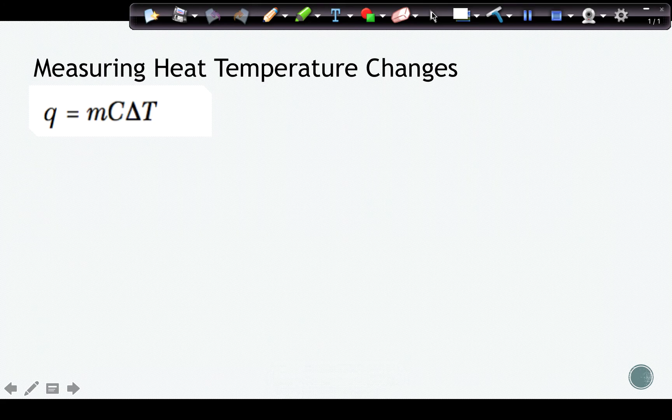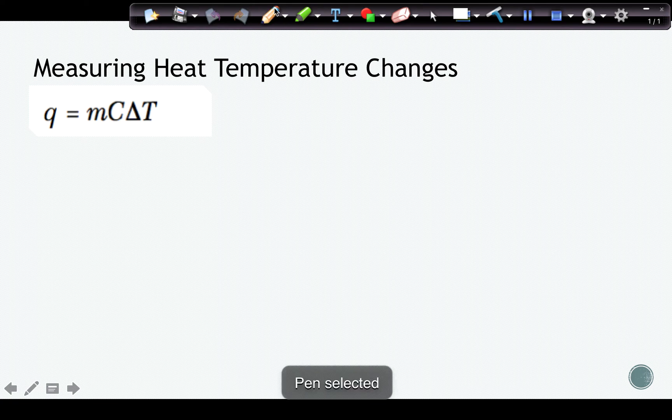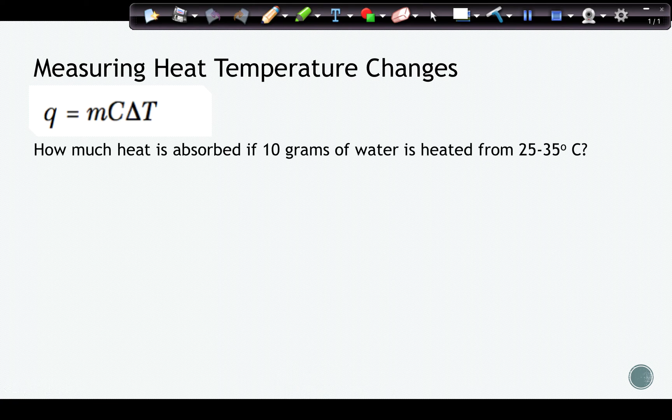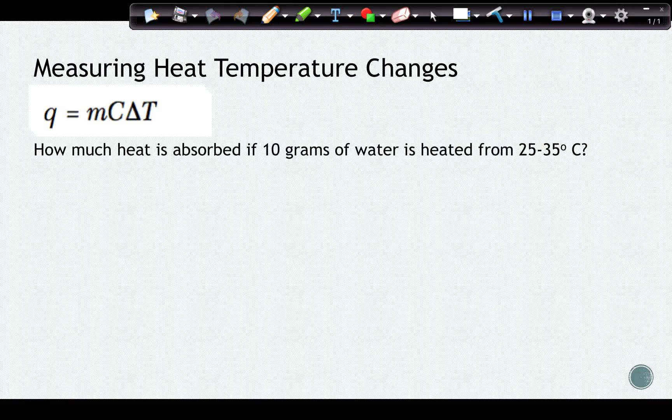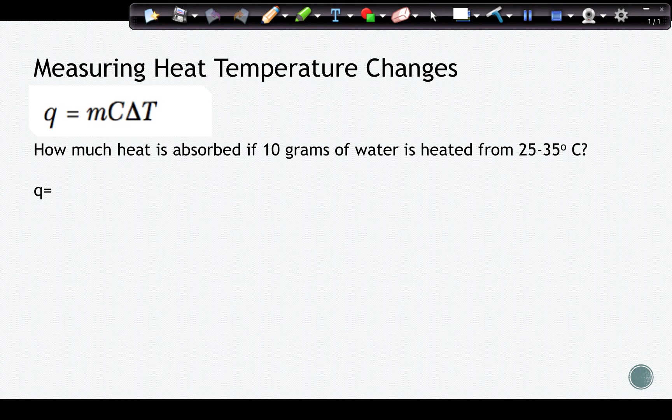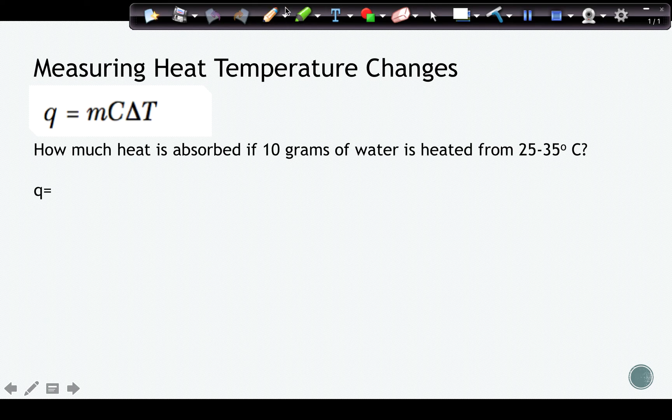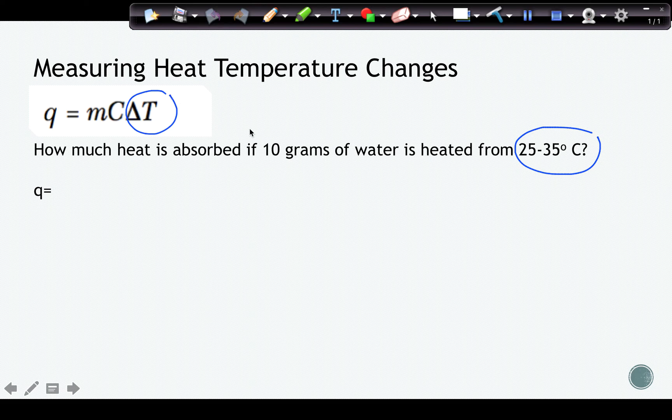So if we're measuring heat for a temperature change, that's going to be Q equals MC delta T. And for example, how much heat is absorbed if 10 grams of water is heated from 25 degrees Celsius to 35 degrees Celsius. And we're going to notice that there was a temperature change. So as soon as the temperature changes, delta T stands for temperature change. That's how we know we're going to use this formula.